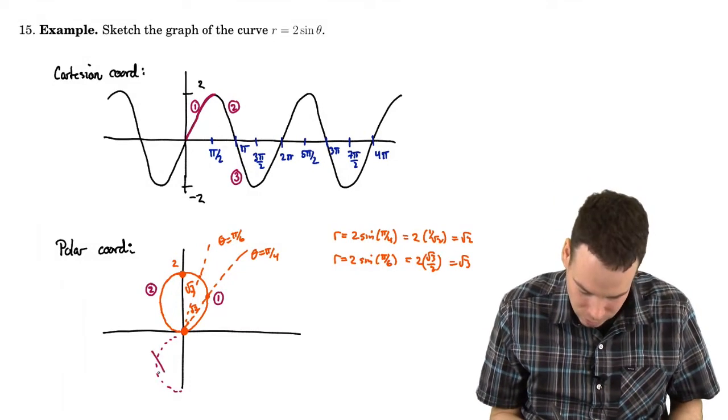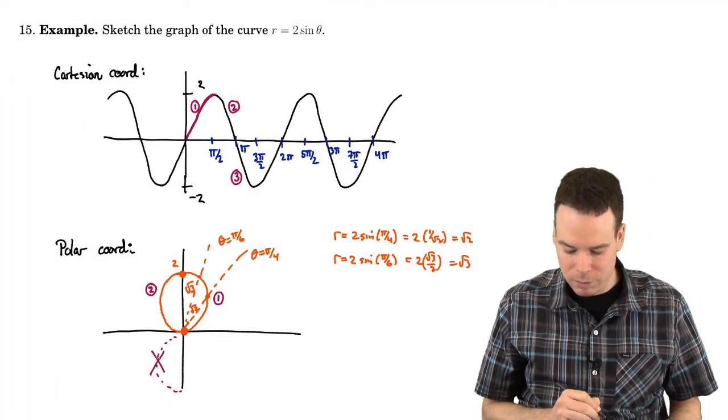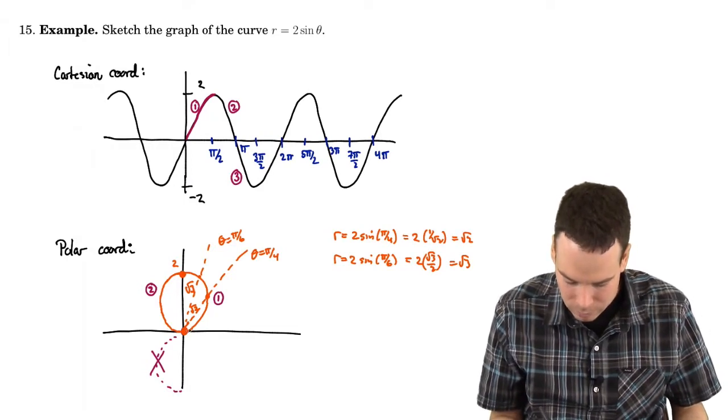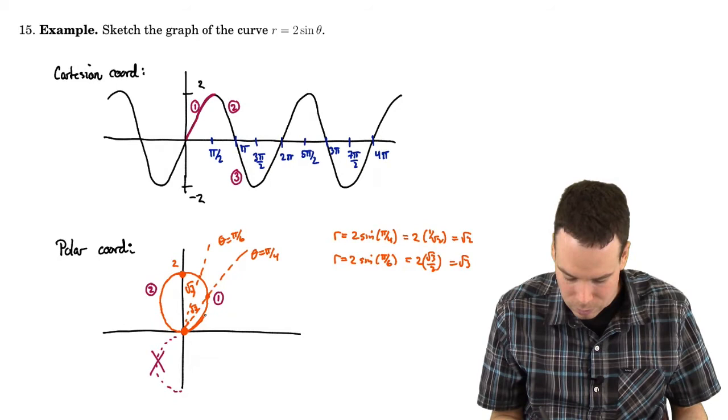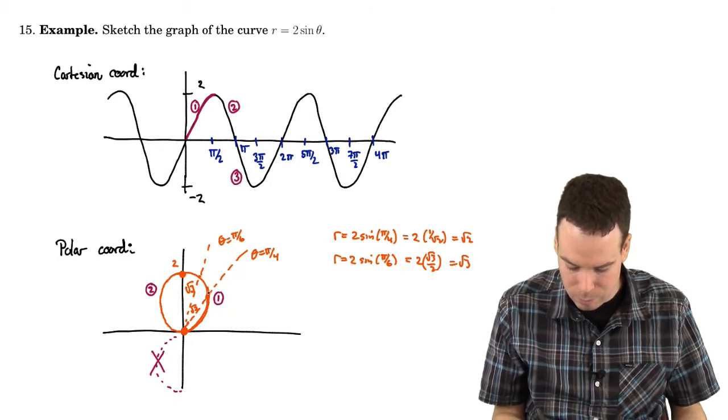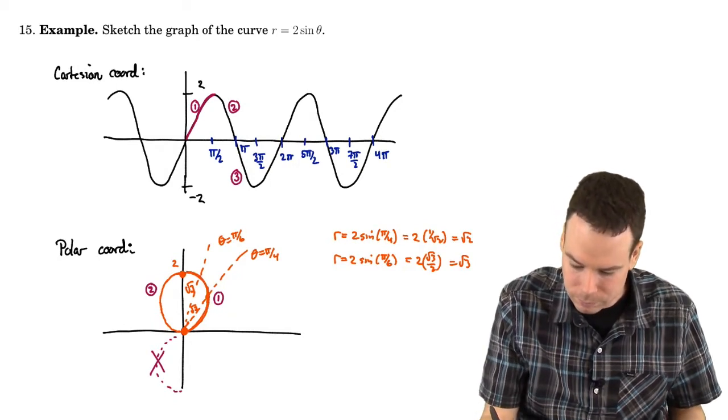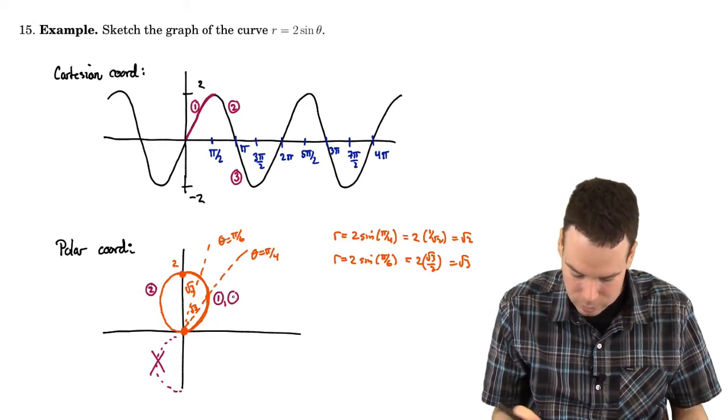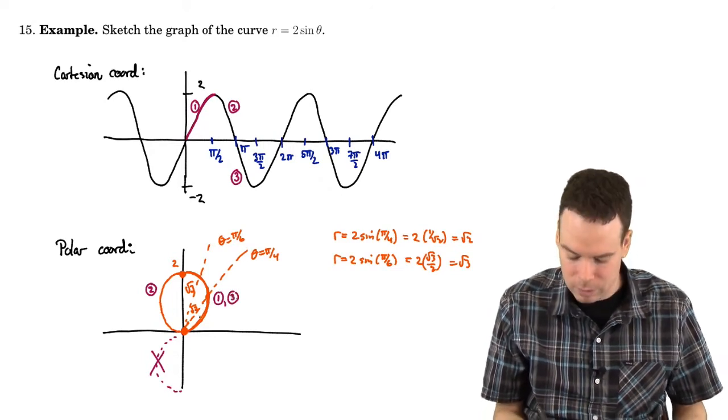So this is not what I have here. Those would be for r values being positive. Instead, I slingshot to the other side of the pole. So I start to trace out what looks like the same portion of the curve again. So this is part 3. Part 3 gives me that portion here.